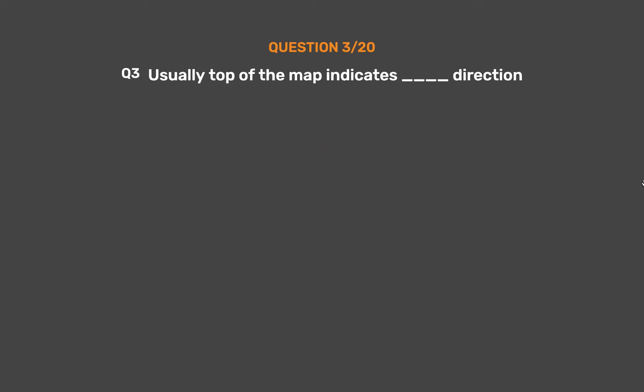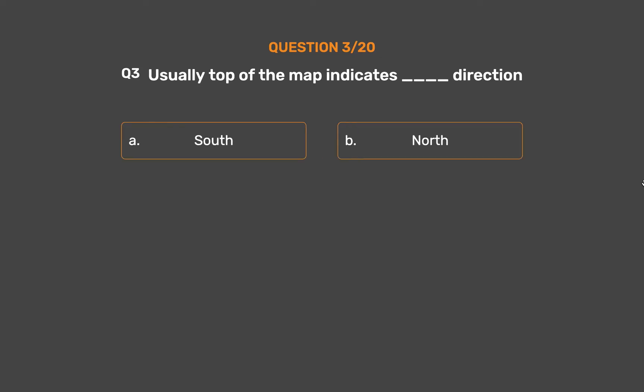Question number 3. Usually the top of the map indicates __ direction. Option A: South. Option B: North. Option C: West. Option D: East.